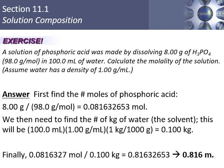We use the same number of moles as before: 0.08163 mol H₃PO₄, and 0.1 kg of solvent. Divide moles of solute by kilograms of solvent — not kilograms of solution. 0.08163 ÷ 0.1 = 0.8163, which rounds to 0.816 molal (lowercase m, spelled m-o-l-a-l).